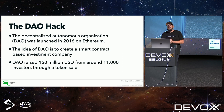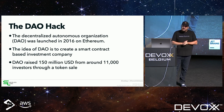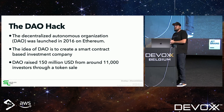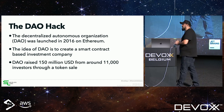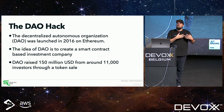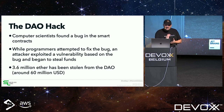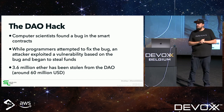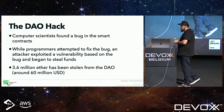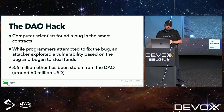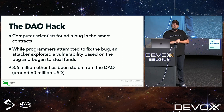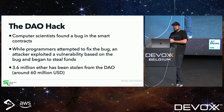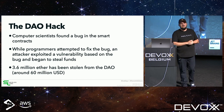The DAO raised over 150 million US dollars from people who wanted to be part of this open, fair, decentralized company. Sadly, some computer scientists found a bug in the DAO's smart contracts. While they were trying to fix it, hackers discovered or already knew about the bug and began stealing funds — ultimately taking about 60 million US dollars.